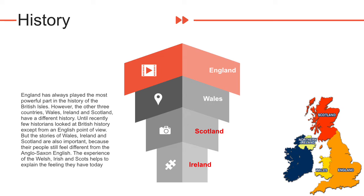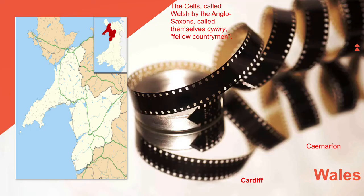Until recently, few historians looked at British history except from an English point of view. But the stories of Wales, Ireland and Scotland are also important, because their people still feel different from the Anglo-Saxon English. The experience of the Welsh, Irish and Scots helps to explain the feeling they have today. By the 8th century, most of the Celts had been driven into the Welsh peninsula. They were kept out of England by Offa's Dyke, the huge earth wall built in AD 779. These Celts, called Welsh by the Anglo-Saxons, called themselves Cymry — fellow countrymen.